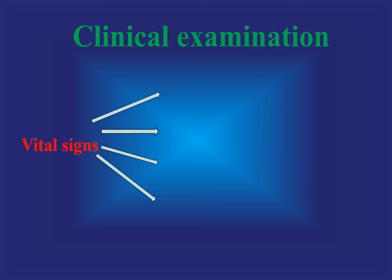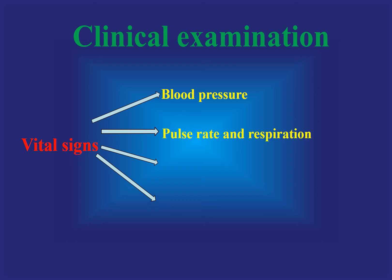Clinical examination depends on certain vital signs, for example blood pressure. Normal blood pressure is around 120 to 80. Older aged patients may have higher blood pressure. Pulse rate should be around 76 pulses per minute. Respiration has to be optimal. Temperature of the patient should be around 37 degrees. Cancer screening is important to rule out any possibility of cancer.